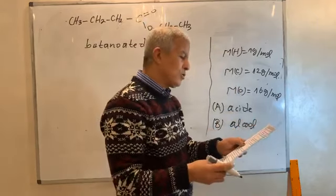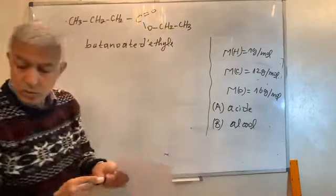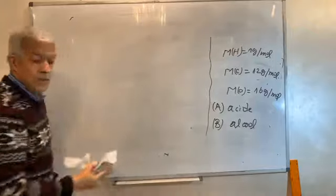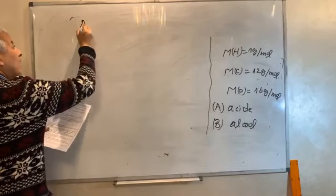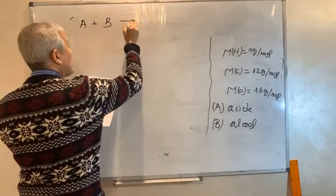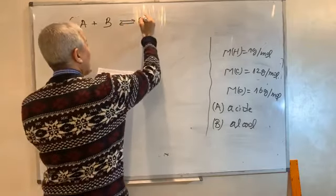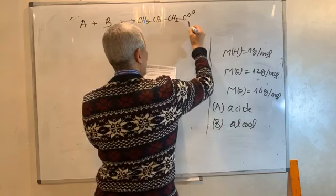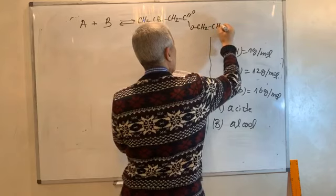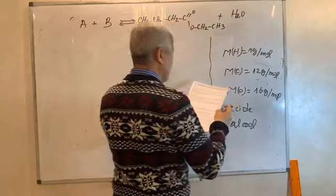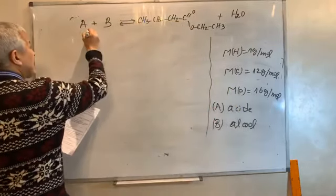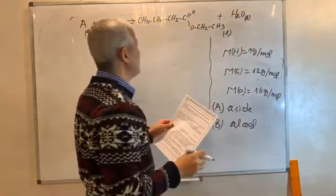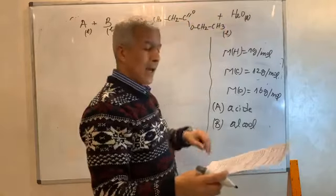L'alcool B en présence d'acide sulfurique selon l'équation de la réaction d'estérification : A + B ⇌ CH3-CH2-CH2-C(=O)-O-CH2-CH3 + H2O. D'après l'exercice, A, B, l'ester et l'eau sont tous des liquides.